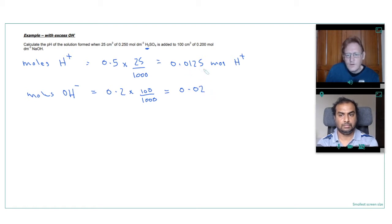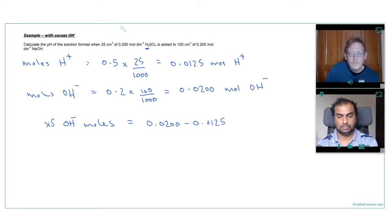And that should give us 0.0125 moles H plus. And then for the hydroxide ions, 0.2 times 100 over 1000, which is 0.02. And if we put them to the same number of decimal places, it's a bit easier to see which one is in excess. So we've got 0.0200 against 0.0125. We can see the hydroxide is in excess. And so we've got excess hydroxide moles.